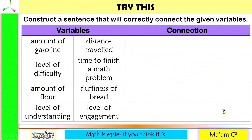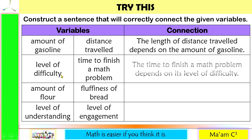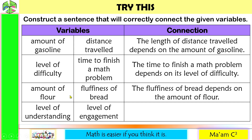Try this: construct a sentence that will correctly connect the given variables. First: amount of gasoline and distance traveled — the length of distance traveled depends on the amount of gasoline that you have. Second: level of difficulty and time to finish a math problem — the time to finish a math problem depends on its level of difficulty. Third: amount of flour and floppiness of bread — the floppiness of bread depends on the amount of flour.